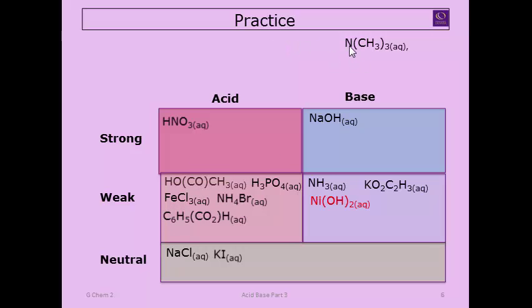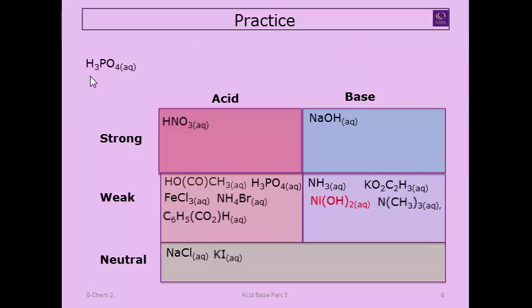Trimethylamine: nitrogen bound to three methyl groups — nitrogen with three bonds — that's weakly basic. Phosphoric acid H₃PO₄: the H-plus-one rule gives four, which equals the number of oxygens — that's a weak acid.